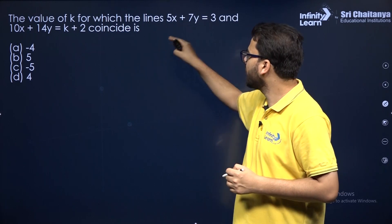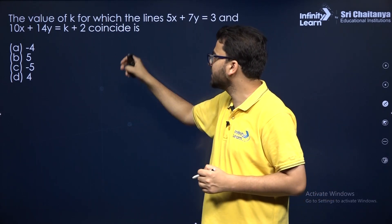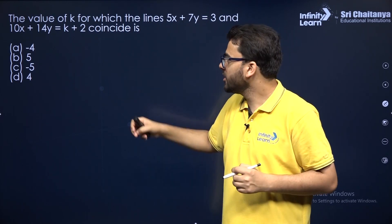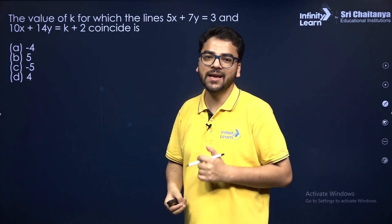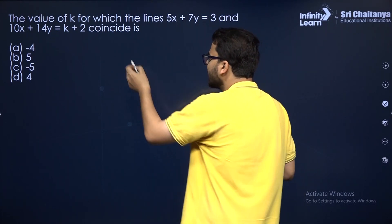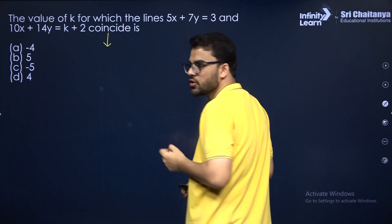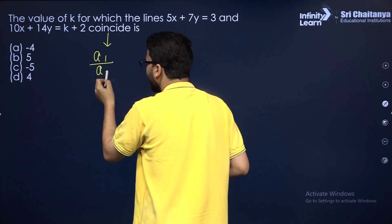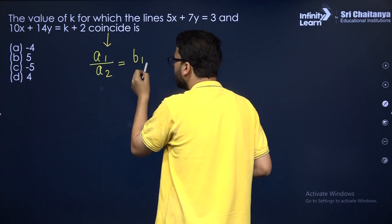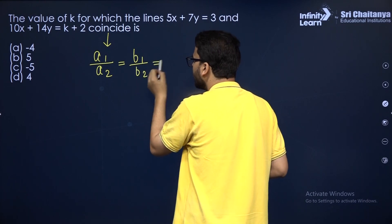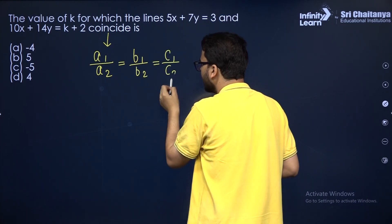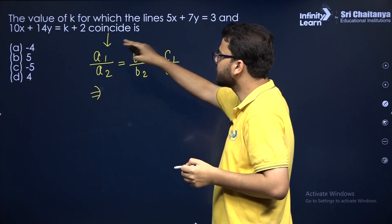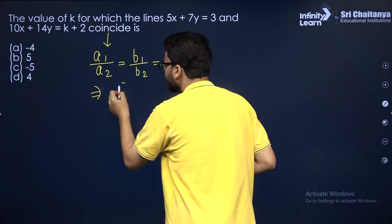Let us take the next question. You have to find the value of k for which these lines are coincident. Coincident lines means infinitely many solutions. The condition for infinitely many solutions is A1 by A2 equals B1 by B2 equals C1 by C2. Now A1 by A2 over here is 5 by 10.